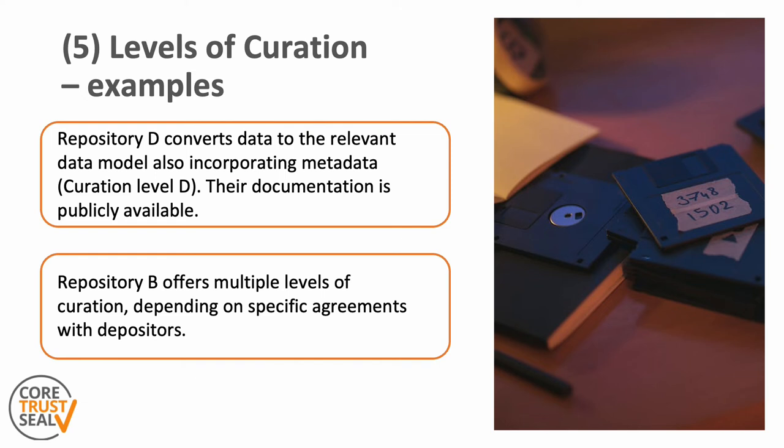These are examples of curation levels that might be present in a repository. For example, repository D converts data to the relevant data model and also incorporates extra metadata — that would be curation level D. Another repository might offer multiple levels of curation depending on specific agreements with depositors.